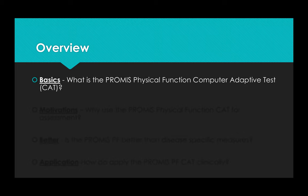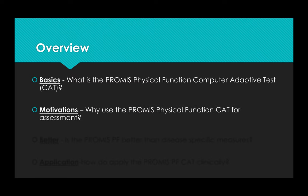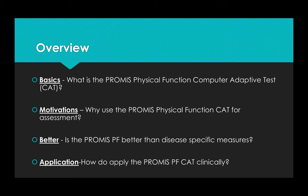What are some basics about the PROMIS physical function measure that are important to remember? What are the motivations to using PROMIS physical function in clinical care? Are the PROMIS measures really better than our existing disease-specific measures? And finally, what are some concrete ways that we can apply the PROMIS physical function to practice?